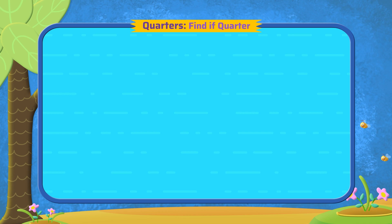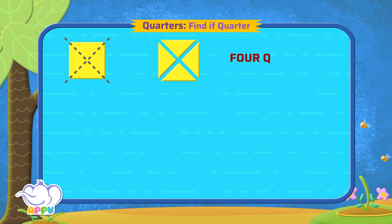Let's see a few examples to see if they are cut into quarters. Let's cut this square along the dotted line. This shape is cut into four parts now. Let's compare the four parts by placing them over each other. We can clearly see all the parts are of the same size. All are equal. So it is four quarters.